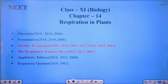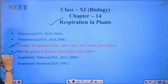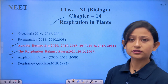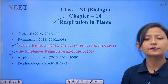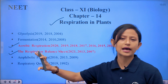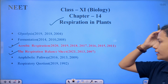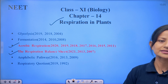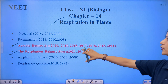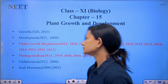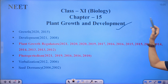Next: Respiration in Plants. The important topics are aerobic respiration and the respiration balance sheet — the ATP produced, whether 36 or 38 ATP. Aerobic respiration is very, very important, and the pathways — glycolysis and Krebs cycle — are key. Many questions come from these topics.